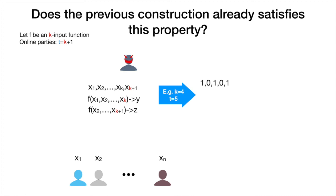For example, say the inputs of the parties are one, zero, one, zero, one. The adversary can compute the output of this function, but he can also compute the output where inputs in all positions have been shifted. There is no way to argue security in this setting by relying on a non-interactive MPC protocol that allows only corruption of a constant number of parties, because here it's as if all the parties have been corrupted and the adversary can change the inputs in all positions of the function.